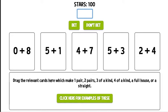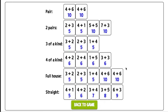Down here it says drag the relevant cards here which make one pair, two pairs, three of a kind, four of a kind, a full house or a straight. Click here for examples of these. So if I click here and I'm a student I can see what one pair is, two pairs, three of a kind, four of a kind, full house, straight.